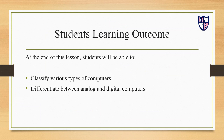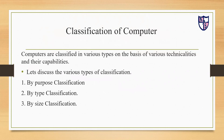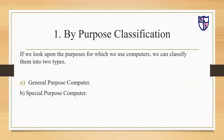What is classification of computers? Computers are classified into different types on the basis of various technicalities and their capabilities. Every type of computer has its own capabilities and technicalities. There are three types of classification: by purpose, by type, and by size. Let's move on to by purpose classification.